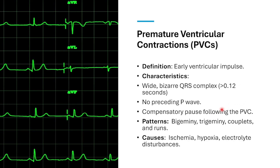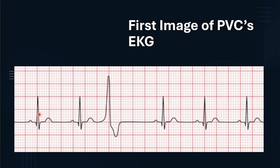Here we can see what's generally a sinus rhythm — these beats generally match up — but we have this weird abnormality where the ventricle contracts prematurely. You can see our P wave, our QRS complex, our T wave, all less than 0.2 seconds, and the QRS is less than 0.12 seconds. But then we have this weird ventricular beat with a QRS way greater than 0.12 seconds — more like 0.28 or even 0.32 seconds. It's a bizarre contraction.